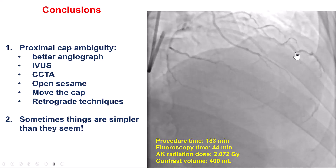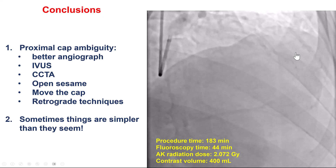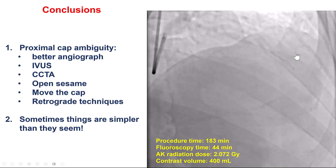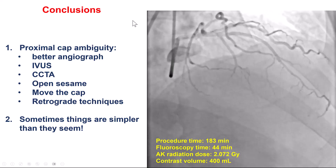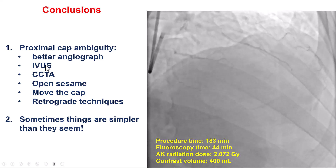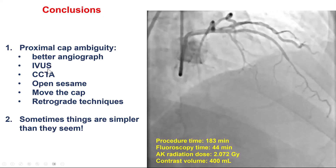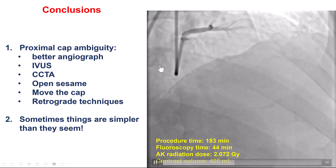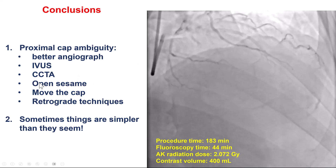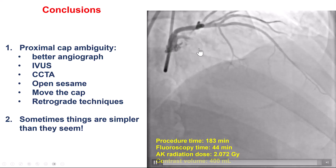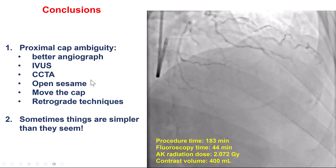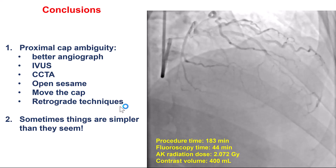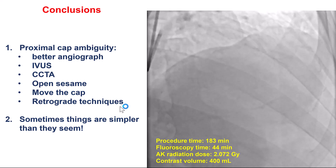The key lesson from this case is that sometimes angiography can be deceiving, and coronary CT can provide better understanding of the anatomy and specifically of the location of the proximal cap. In this case, IVUS suggested the vessel we were seeing was more the septal, but in the end it was probably the LAD. Open-sesame — inflating a balloon from the main vessel into a side branch at the proximal cap — was not done in our case, as we did not want to risk losing the large diagonal. Finally, the retrograde techniques were tried but we were not successful in crossing both the septal and the epicardial collaterals.